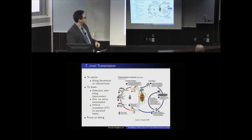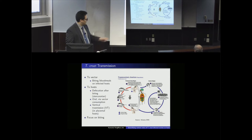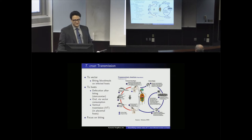In stage one, the vector bites the host, and after the host scratches, the parasite spreads inside the host. In stage five, another vector bites an infected human and acquires the disease — completing the cycle of transmission.